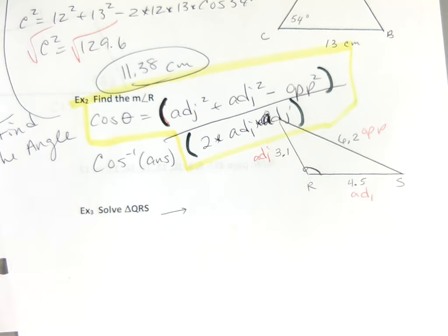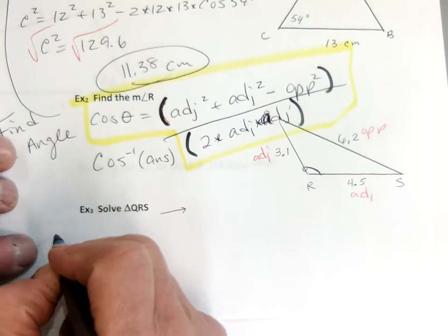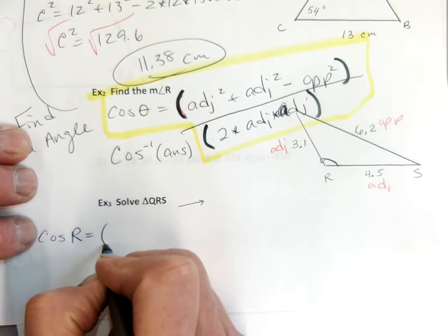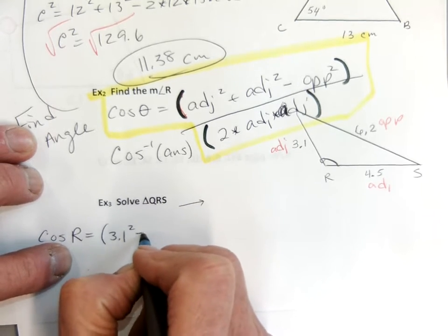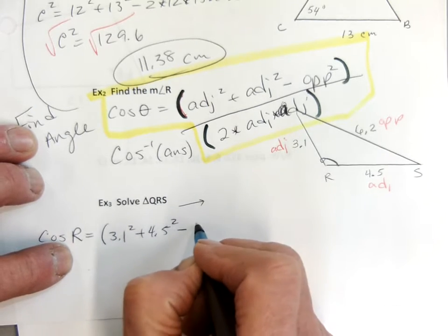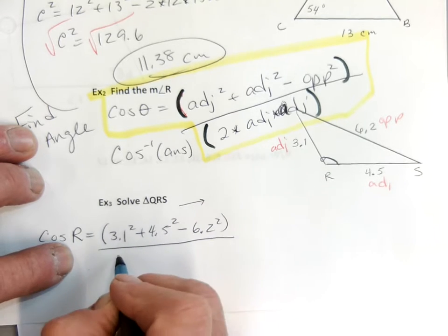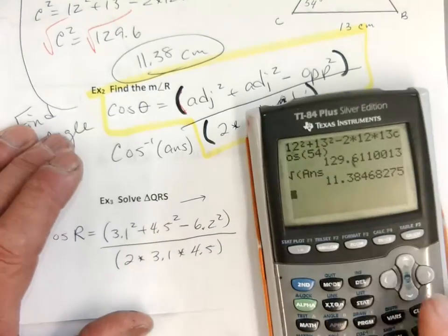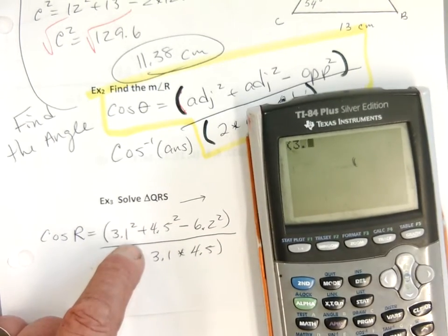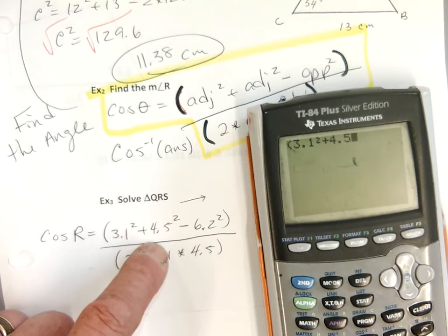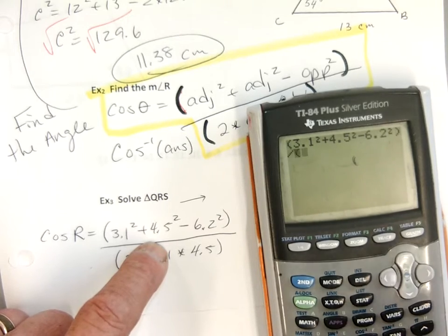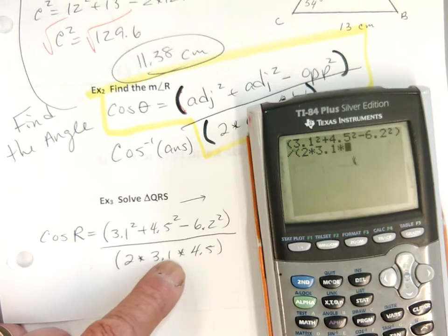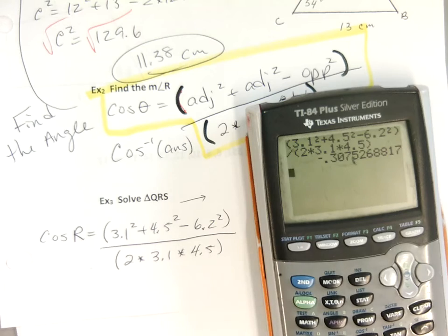Okay, just set up the equation. So I'm going to set up: cosine of R equals parentheses 3.1 squared plus 4.5 squared minus 6.2 squared, divided by parentheses 2 times 3.1 times 4.5. You have to do it — 3.1 squared plus 4.5 squared subtract 6.2 squared, close parentheses, divided by parentheses 2 times 3.1 times 4.5. I get a decimal.